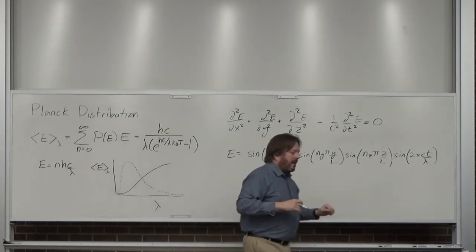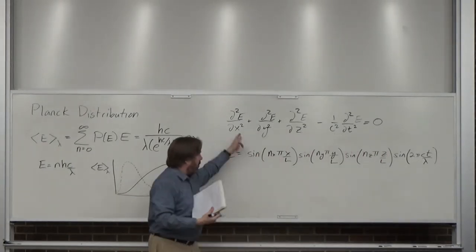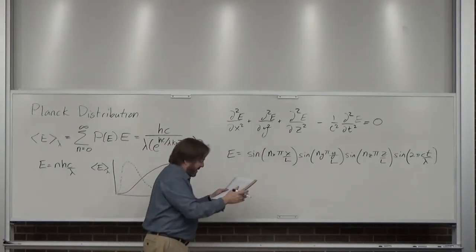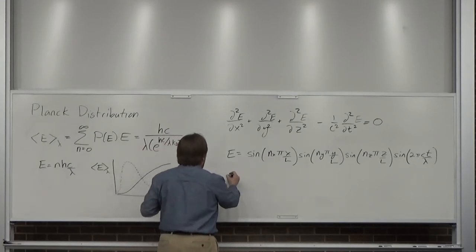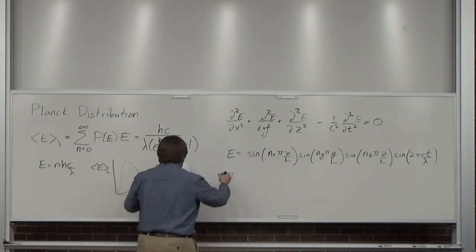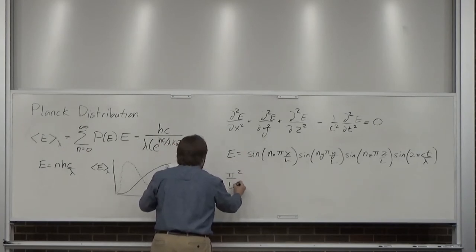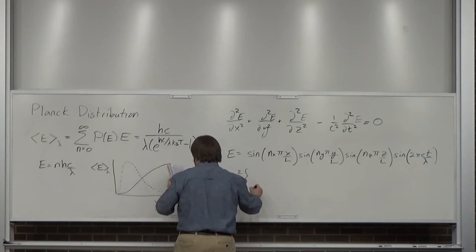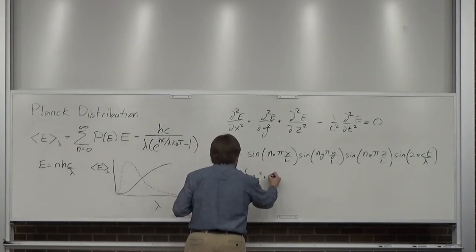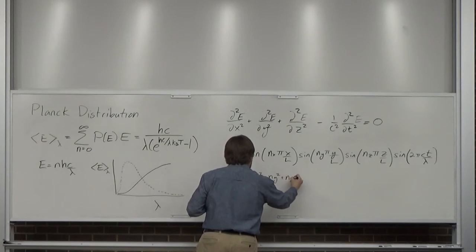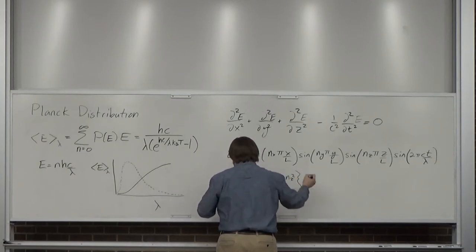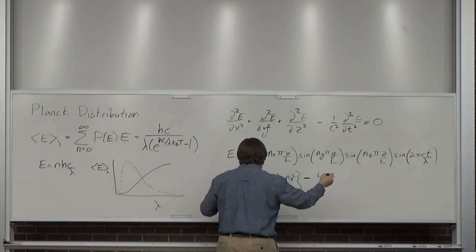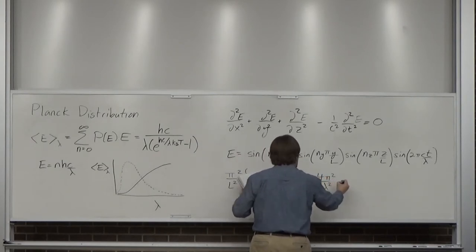Once we plug the solution in, after some factoring — you don't need calculus for this — there's a pi squared over L squared common to each term, so we factor that out and end up with nx squared plus ny squared plus nz squared. Then the time term gives us 2 pi over lambda squared, setting the whole expression equal to zero. From that, N squared equals 4L squared over lambda squared.